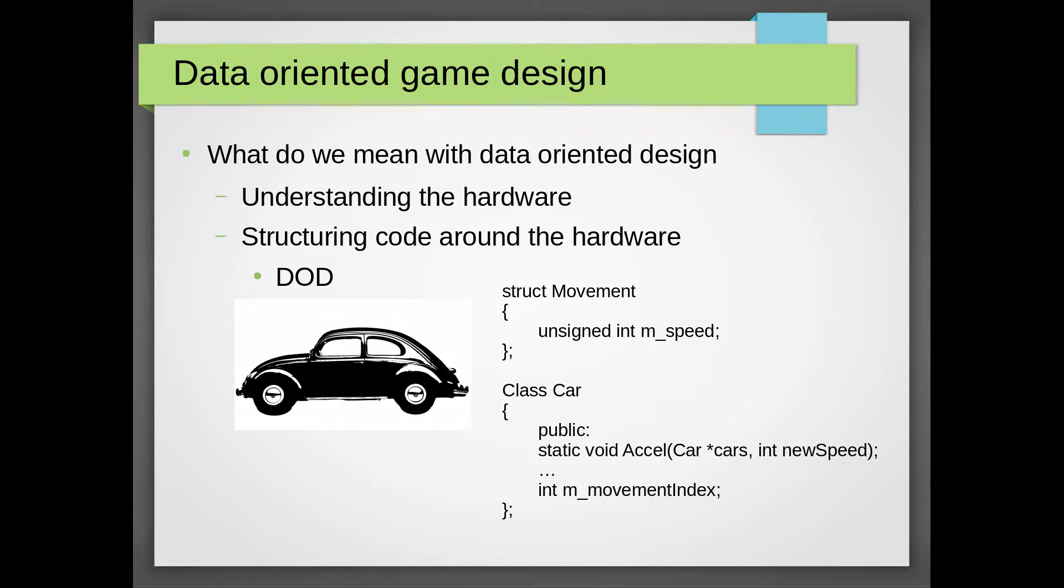Given some knowledge about the hardware it might make sense to store the speed of all cars in a vector outside of the car object and instead keep references to the vector from each car.